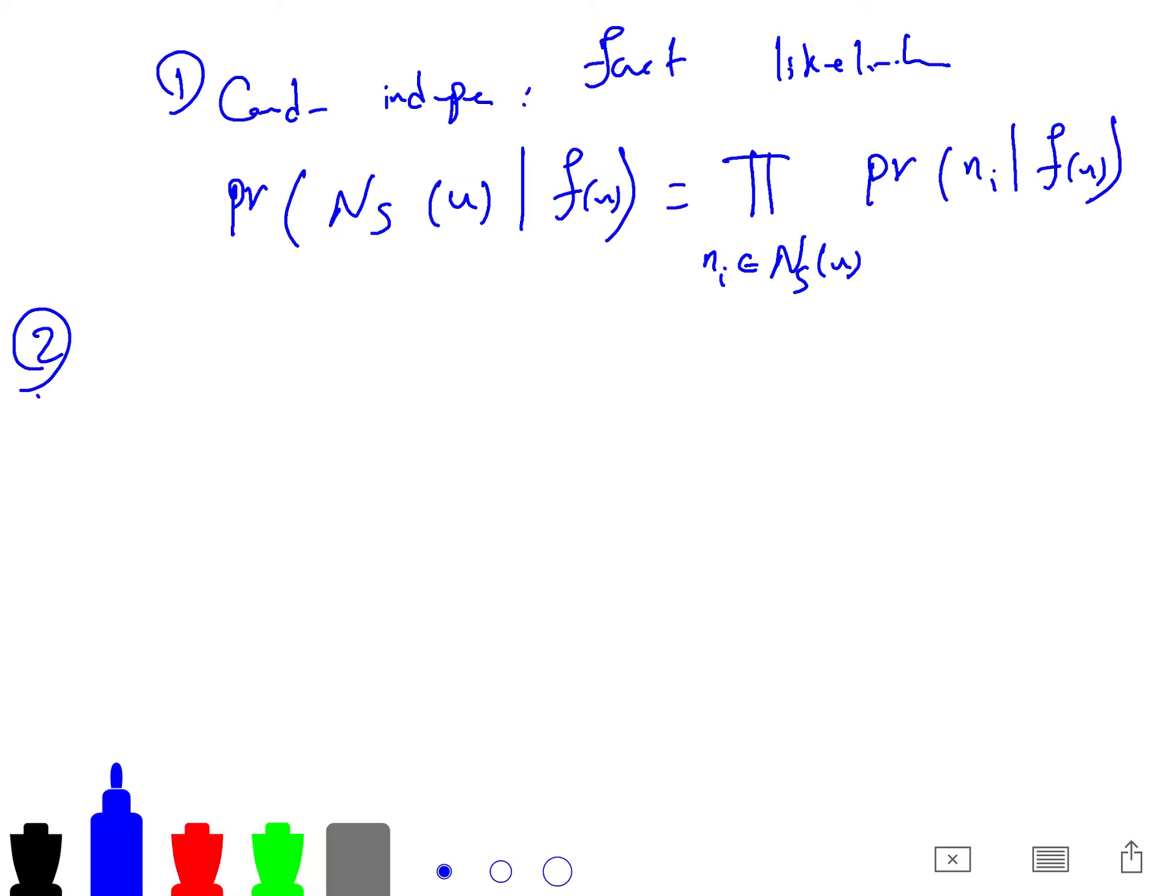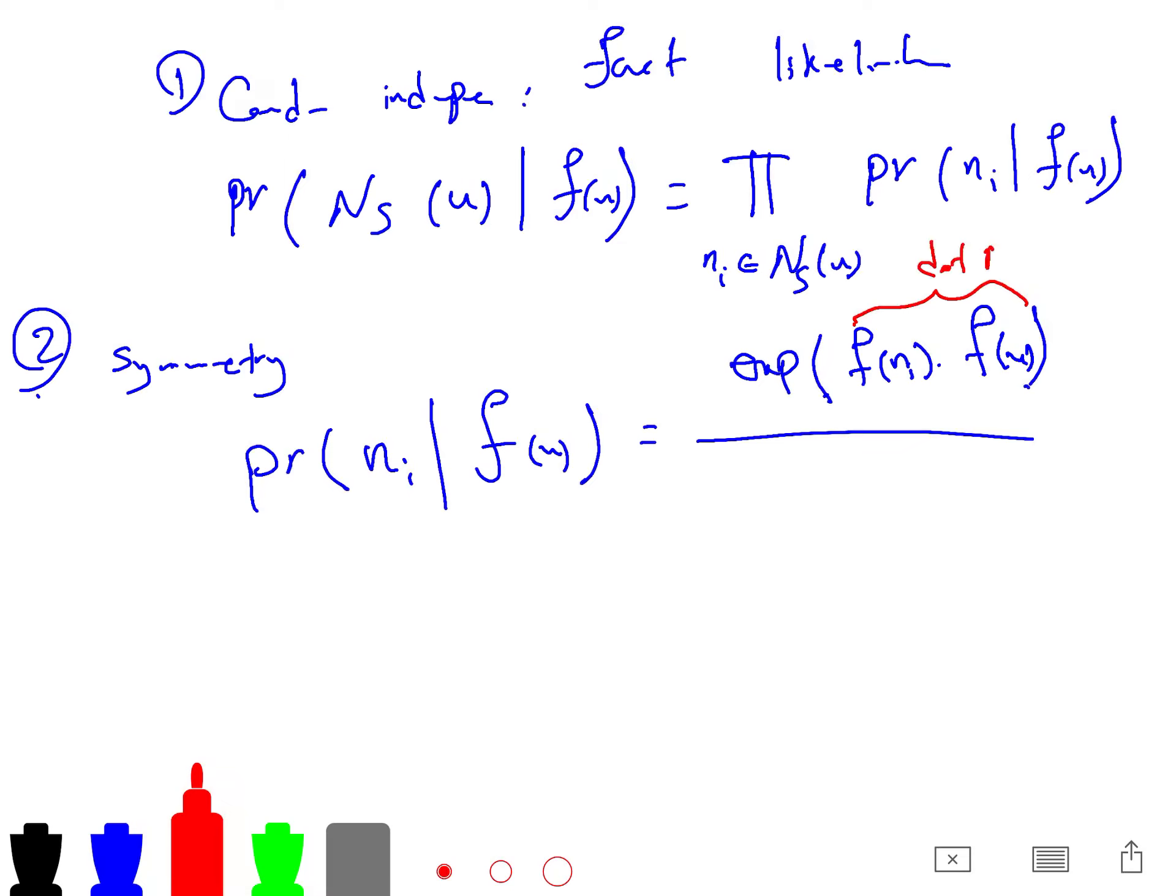And the other assumption is that the symmetry in feature space. A source node and a neighborhood node have a symmetric effect over each other in feature space. So the probability of Ni, given that you know the representation of a fixed node, is just the exponential of F of Ni dot F of U. You have seen this trick in several different algorithms. So this is just a dot product, it's a measure of similarity, and the denominator is the sum over that.